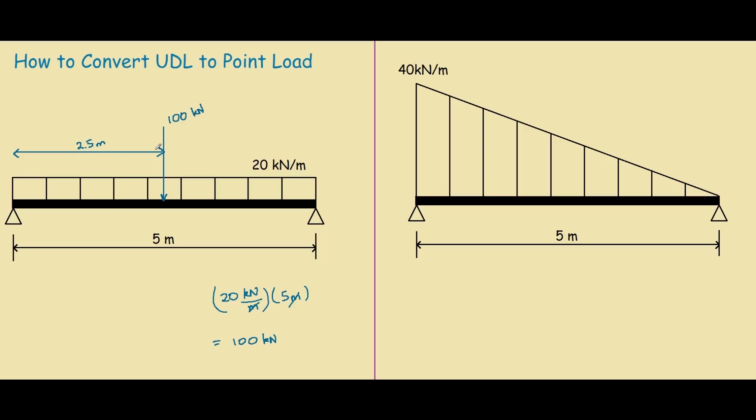One way of thinking about it is that this 100 kN at 2.5 meters imposes the same effect onto the beam as this 20 kN load over 5 meters. They both do the same thing, but now that we've converted to a point load, it's much easier to find the support reactions.